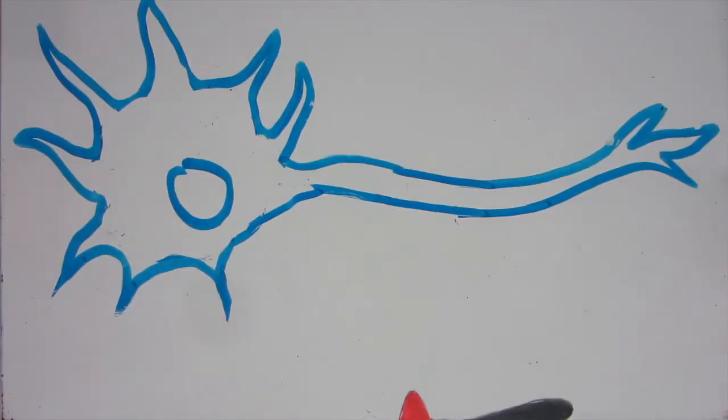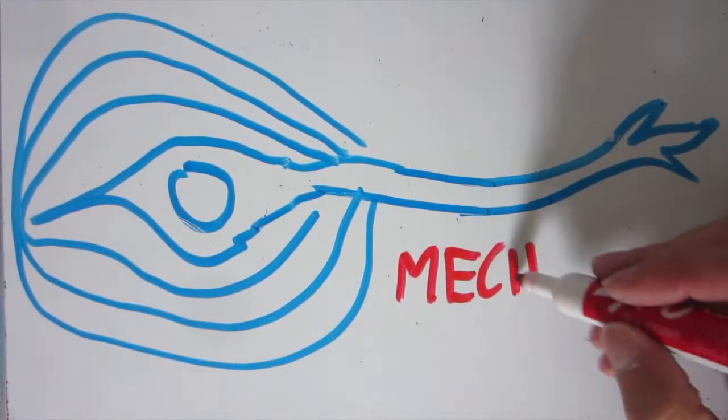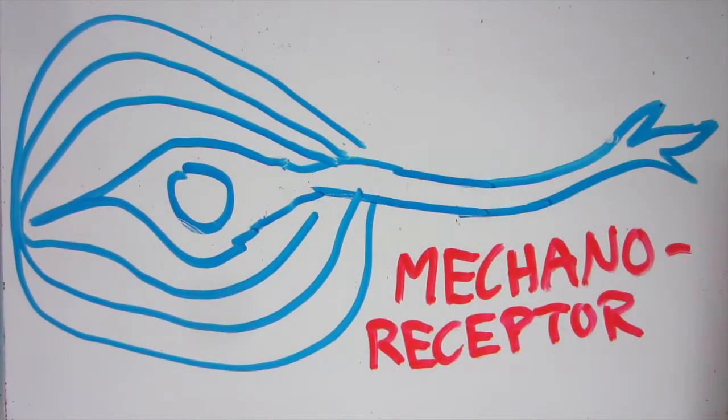The fact that your nerves can go off willy-nilly if you hit them might seem like a problem, but most of your nerves are well protected by muscle and bone. It can be a useful feature, too. In fact, specialized neurons that are extra sensitive to pressure are responsible for your ability to feel all touch.